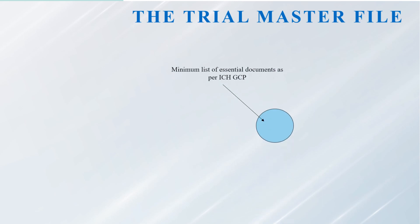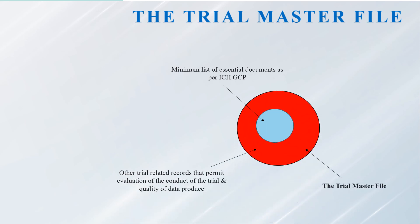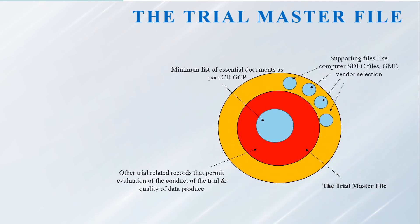This is another example of how documents are arranged in the TMF reference model. Now let us look at how the trial master file is structured. The blue circle represents the minimum list of essential documents as per ICH GCP. The red circle indicates trial-related records that permit evaluation of the conduct of the trial and quality of data produced. The yellow circle indicates other business records and supporting files like computer SDLC files, GMP, vendor selection, etc., that need to be part of the TMF. In summary, all artifacts of the trial should be filed as per the TMF reference model and should be easily retrieved during inspection.